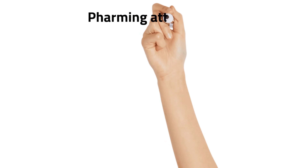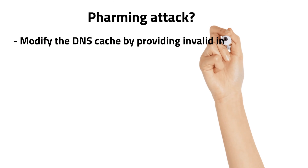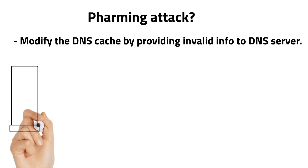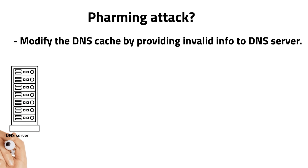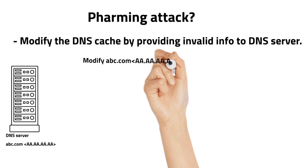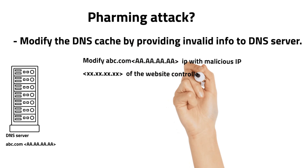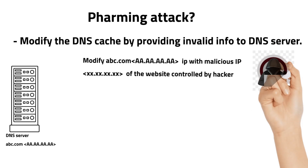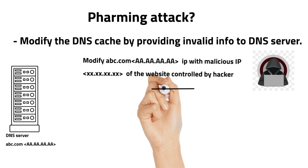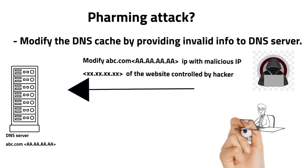Today we are going to see pharming attack. It is nothing but modifying the DNS cache by providing invalid info to the DNS server. For example, abc.com has a legitimate IP, but a hacker tries to modify abc.com's IP with the malicious IP of a website controlled by him.